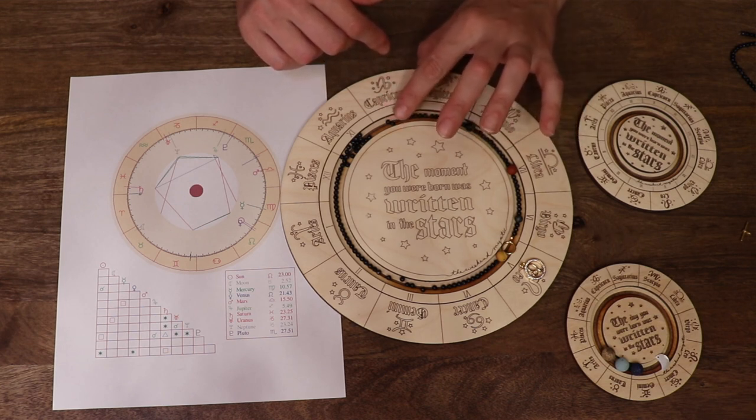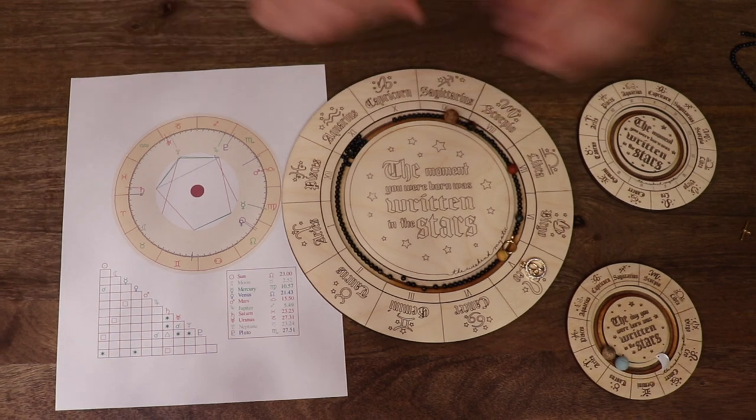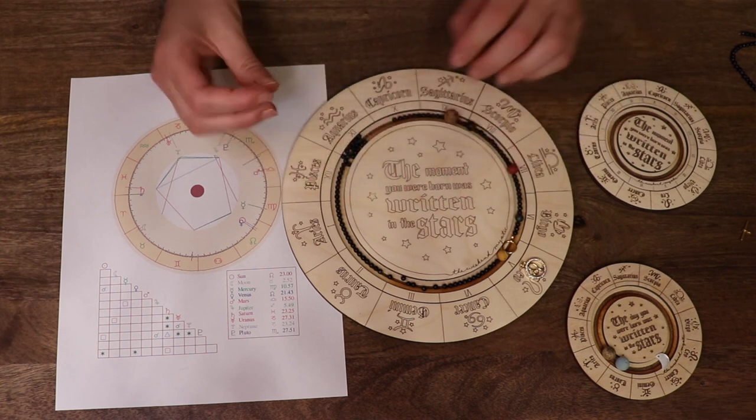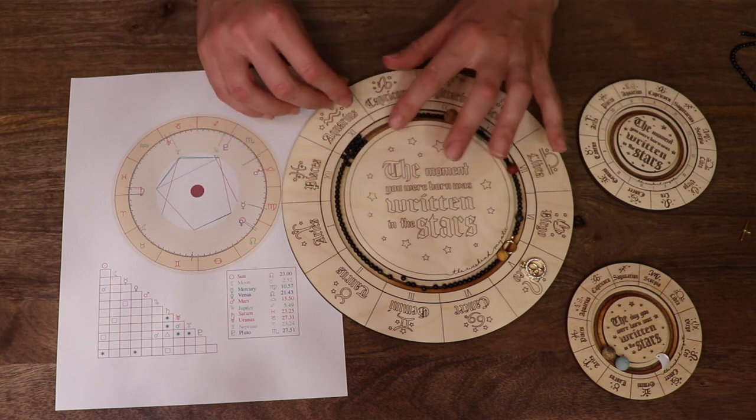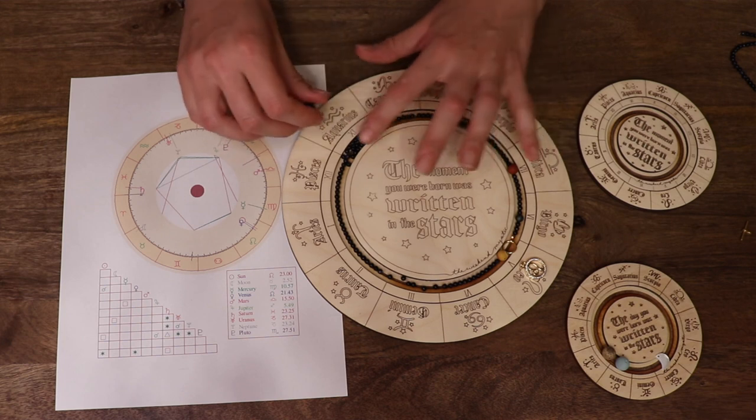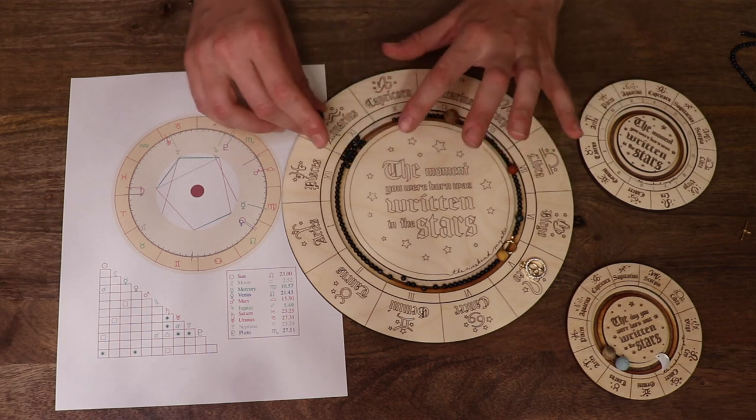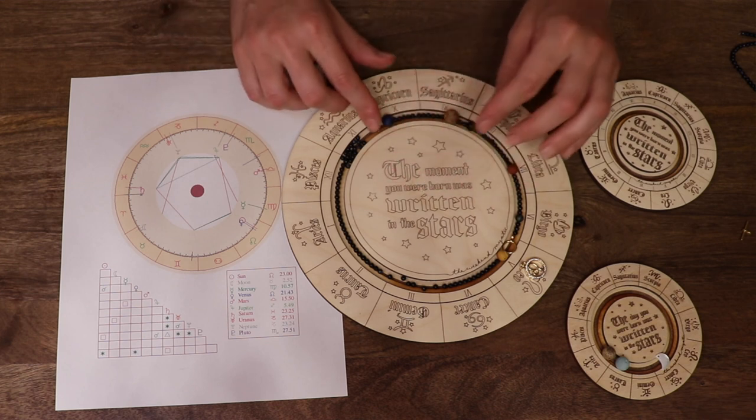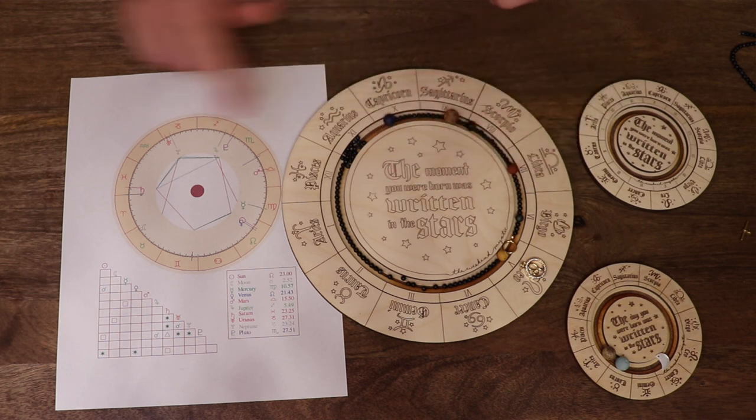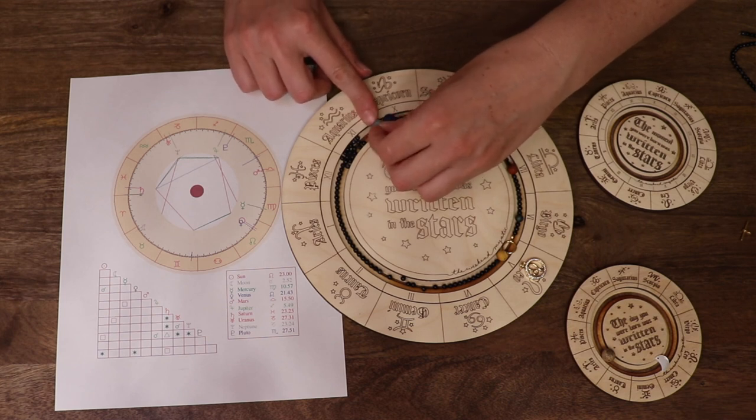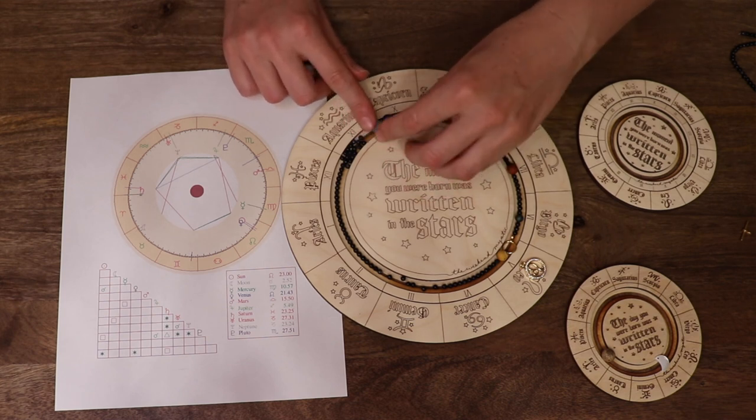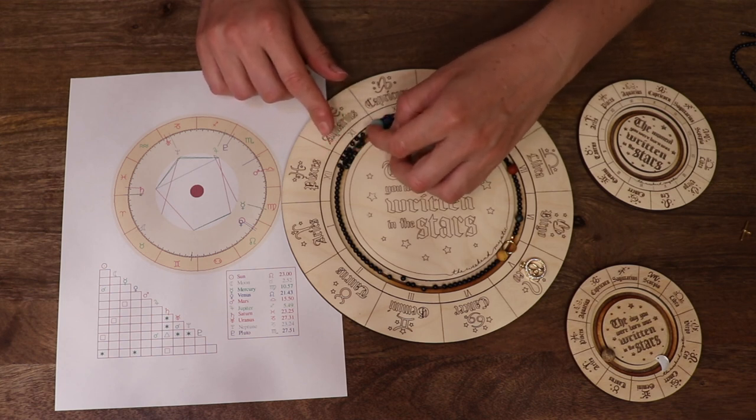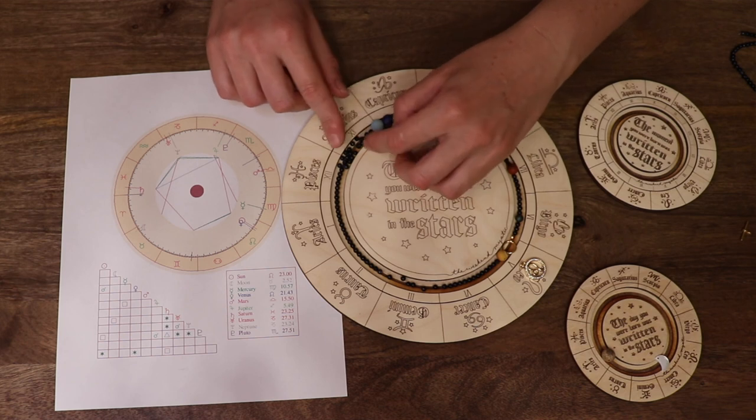And then who do we have next? Next we have Neptune. Neptune is blue lapis. And Neptune is right here. Neptune is right next to Uranus. So we're going to put Neptune right here and then we're going to put Uranus right up next to him. I'm going to move these guys around a little bit, give them some space. Here's Uranus. Beautiful 10mm Amazonite. Snuggle up next to each other.